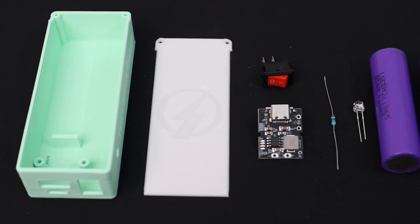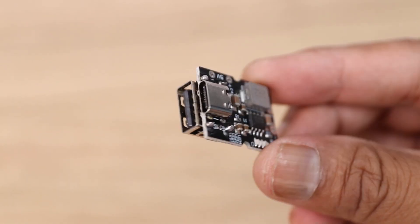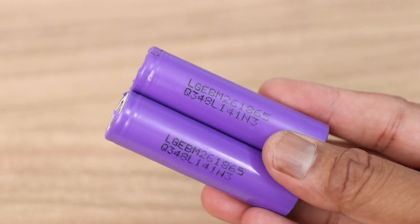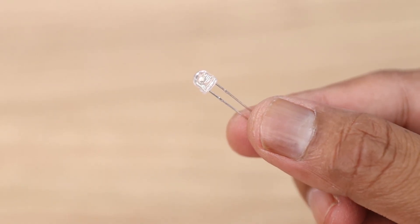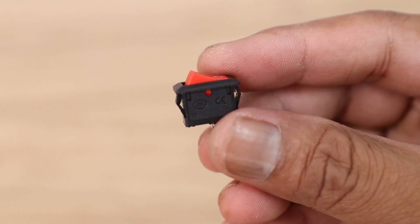To make this power bank, you will need 3D printed enclosure, power bank module, two 18650 battery, one straw hat LED, one 47 ohm resistor, and a rocker switch.